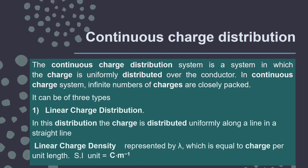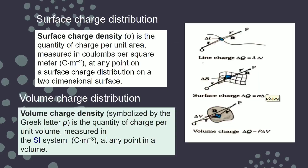So λ = dq/dl with unit coulomb per meter (C/m). As shown in the diagram, a straight or curved line carries the distributed charge. At point P we want to find the field, and we will look at the expression shortly. You should remember: λ = dq/dl in coulomb per meter for linear charge distribution.